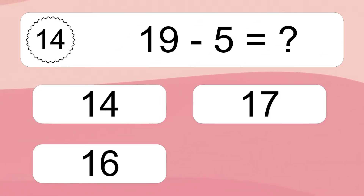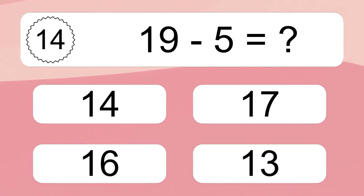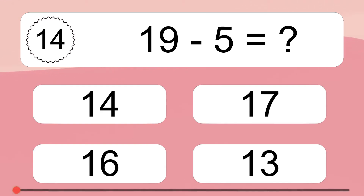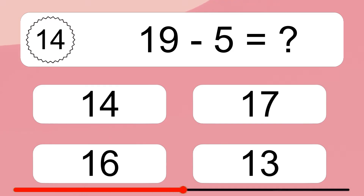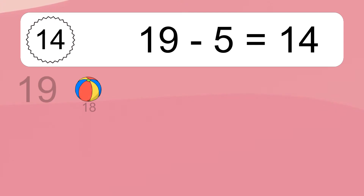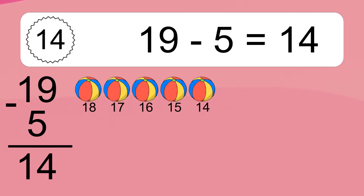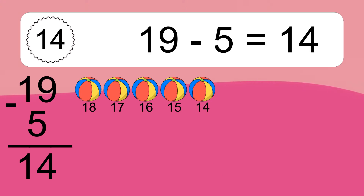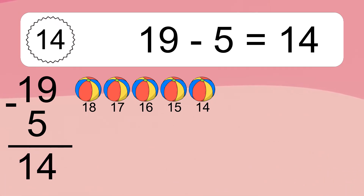19 minus 5 equals what? 19 minus 5 equals 14. Let's count it. 18, 17, 16, 15, 14.